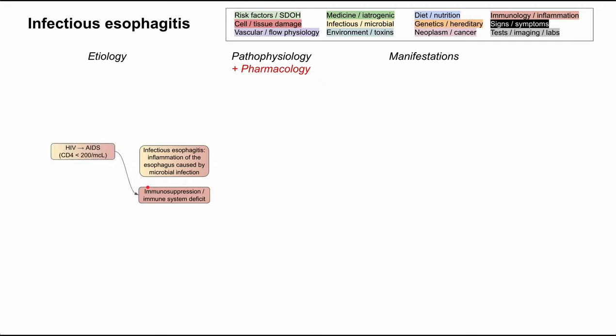Infectious esophagitis is most commonly associated with HIV and AIDS, particularly when the CD4 count drops below 200. You can also be immunosuppressed from chronic kidney disease, specifically in patients on chronic dialysis. Organ and graft transplant patients are also immunosuppressed, partly from the medications given to prevent organ rejection. Various malignancies can also cause immunosuppression and immune deficits, both from the malignancies themselves and from the chemotherapies used to treat them.